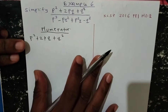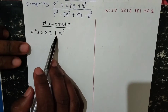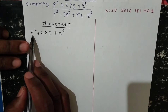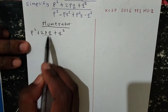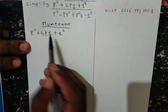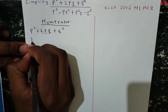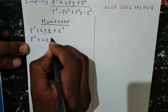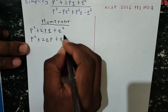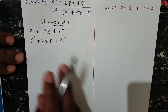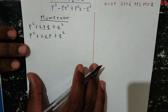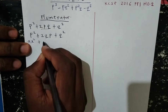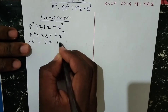The numerator is p squared plus 2pq plus q squared. If you observe this clearly, it is a quadratic equation. If I choose p to be my variable, I would rearrange this as p squared plus 2qp plus q squared, so I can form a perfect quadratic expression in the form ax squared plus bx plus c.